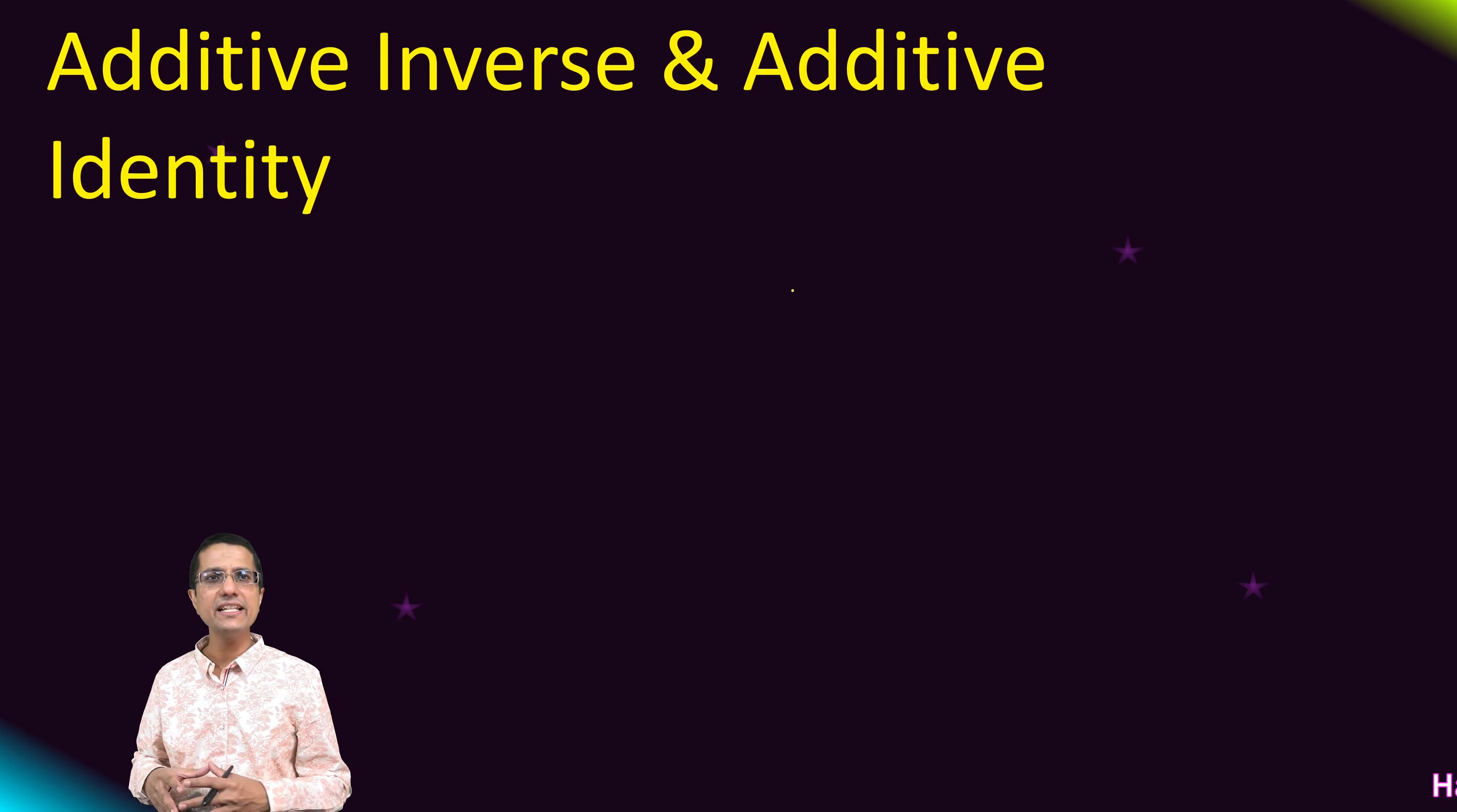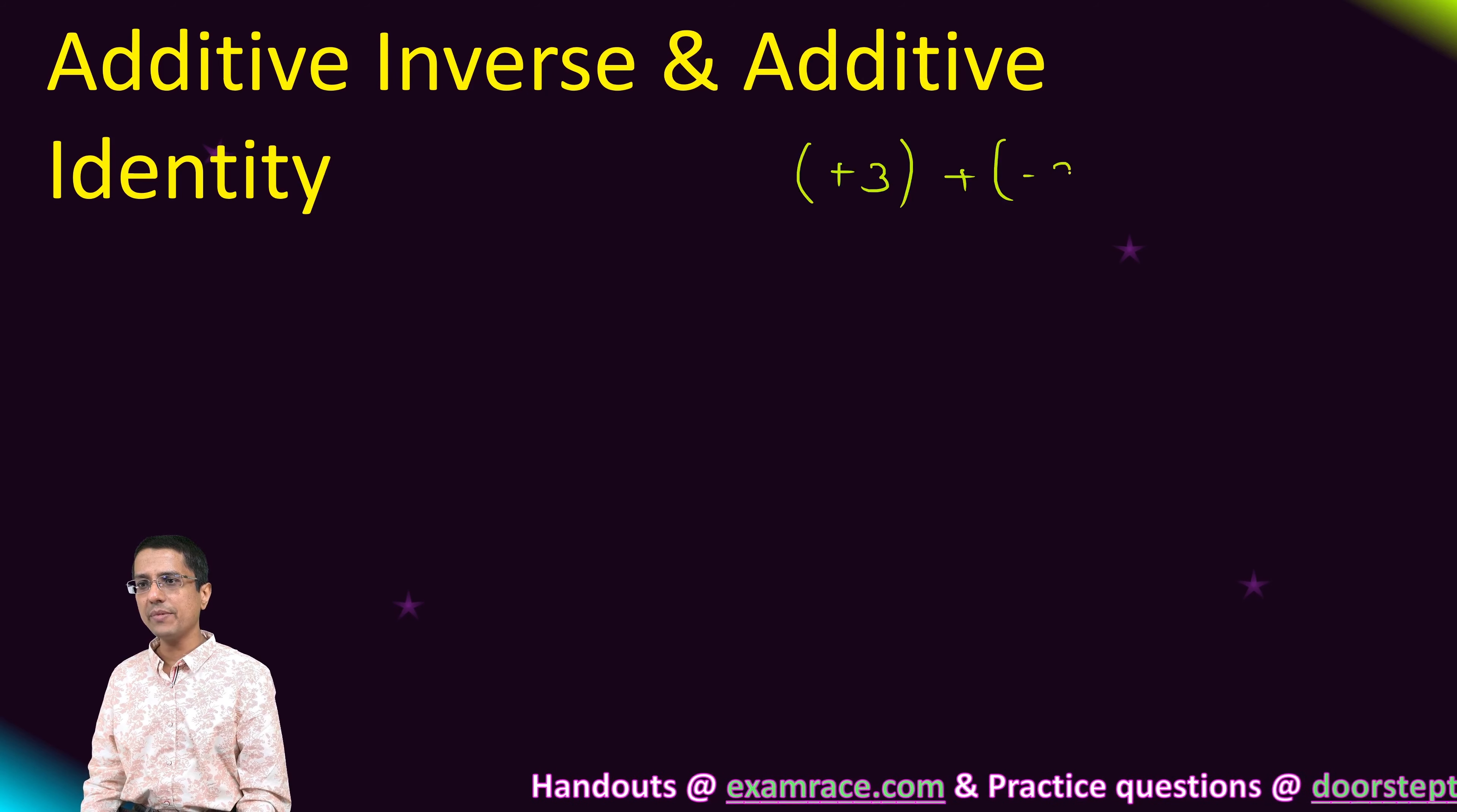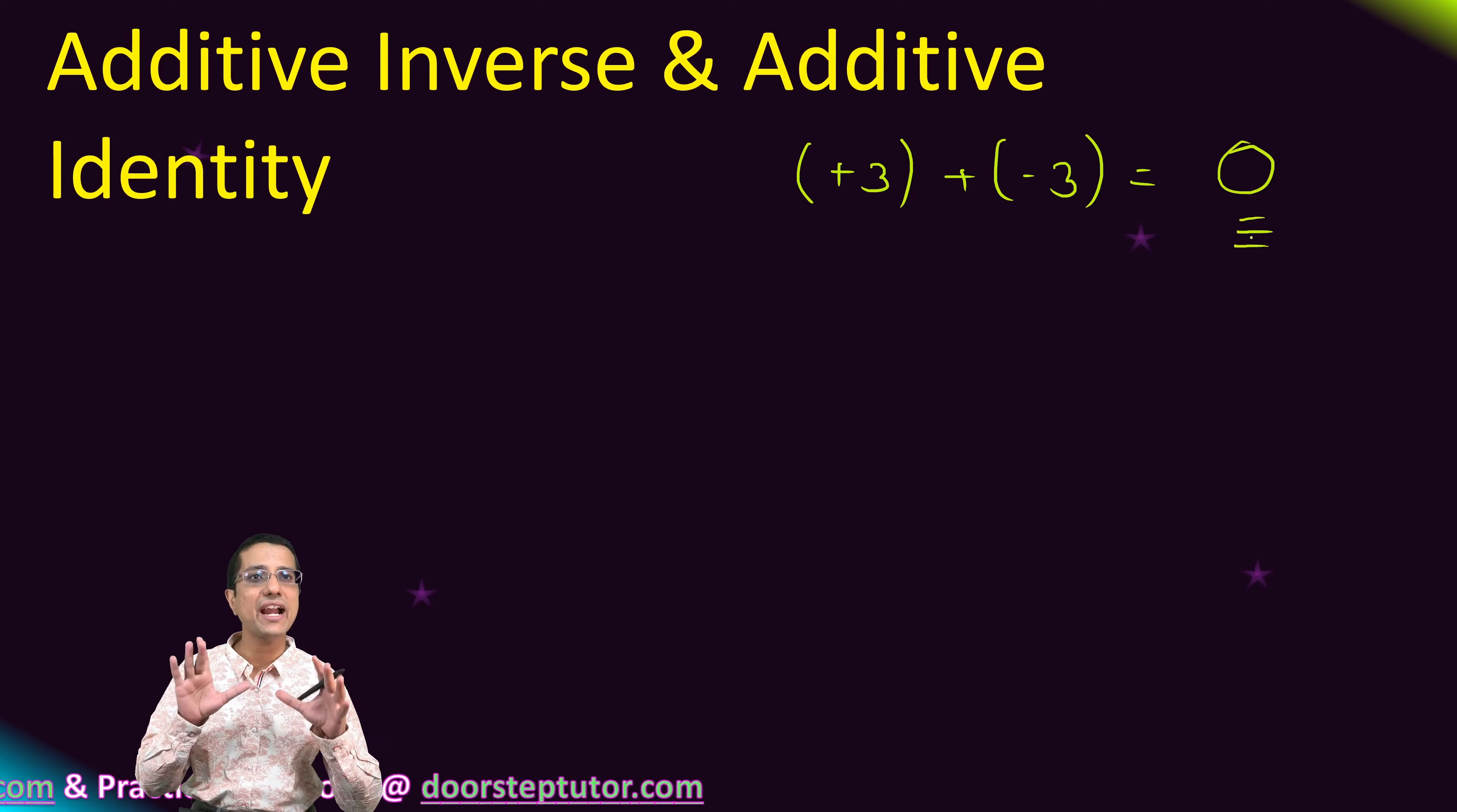The next thing we will understand is: if I add two numbers which are additive inverse of each other. So I will again use the same example, plus 3 and minus 3. If I add them together, I get 0. This 0 is the additive identity.